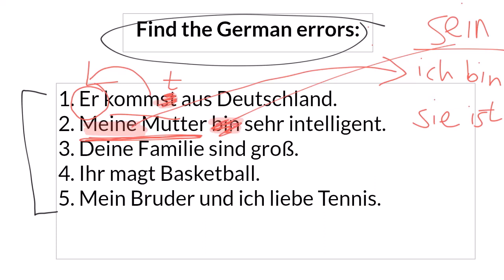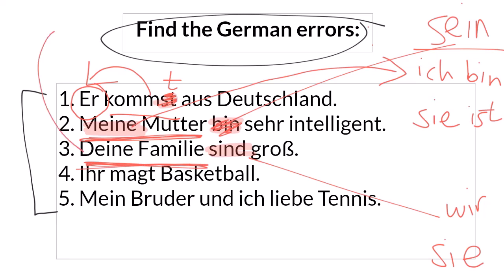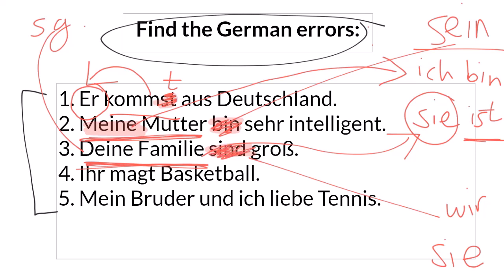Number three is a classic error. The verb chosen is 'sind', but 'sind' comes from either the wir form or the sie form of sein, so it's plural. But if we look at the subject — 'your family' — even though family is made up of lots of people, it's actually singular. Like 'meine Mutter', it's singular and feminine, so the correct verb is 'ist': deine Familie ist groß.